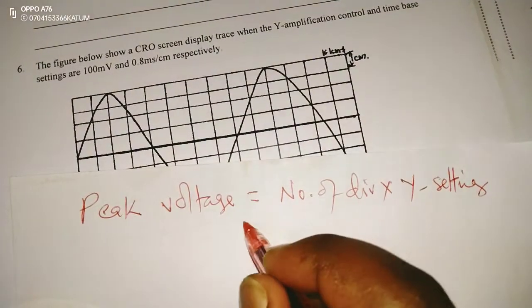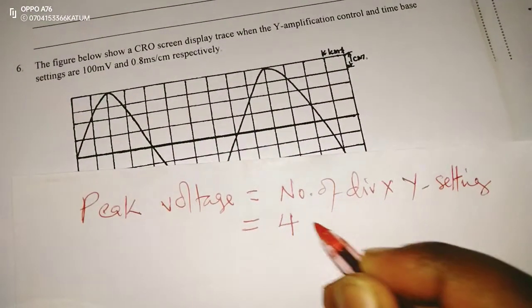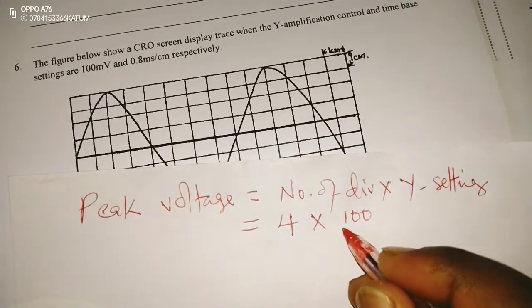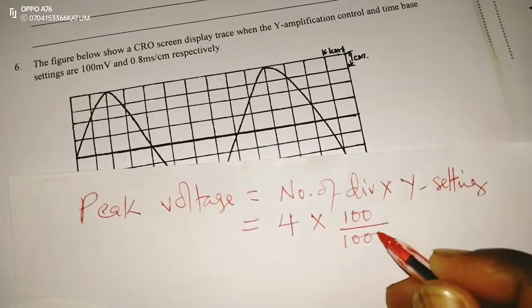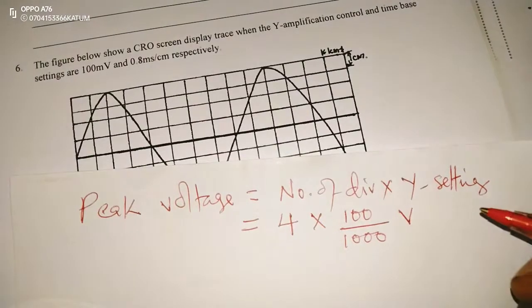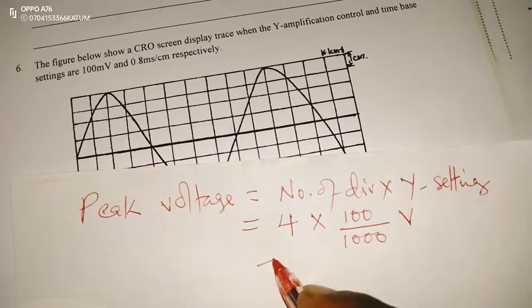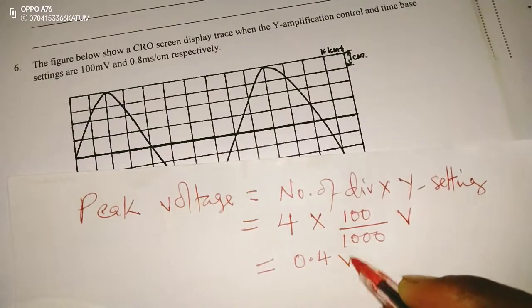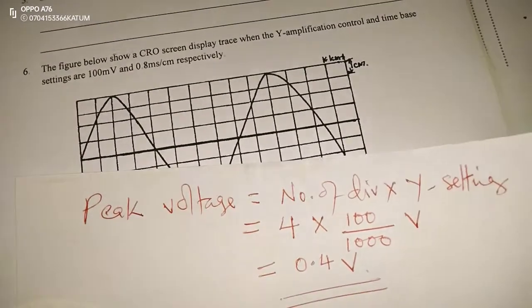So we shall have 4 divisions multiplied by 100 millivolts. To make them volts, we divide by 1000, so that we may have volts. Therefore, the volts here are going to be 0.4 volts. That is part A.